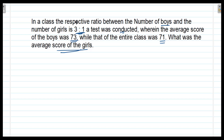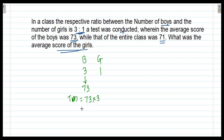Now here, in a class, the ratio of the number of boys to that of the number of girls is 3 is to 1. So we will assume that the number of boys is 3 and the number of girls is 1. A test was conducted wherein the average score obtained by boys is 73. There are 3 boys and the average score of these 3 boys is 73, and therefore the total marks obtained by 3 boys will be 73 into 3, which is equal to 219.